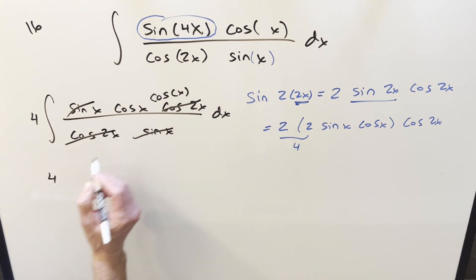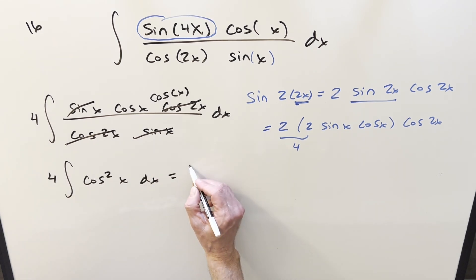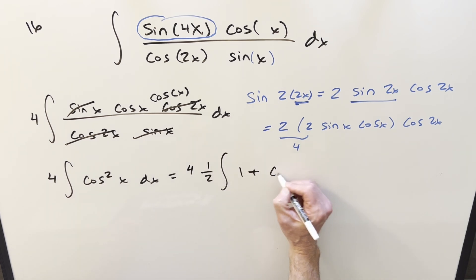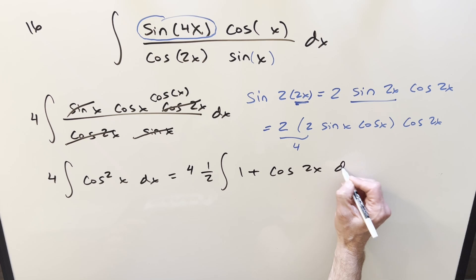But when I multiply those together, this is going to be, what we're left with is cosine squared x. And so what I can do is reduce that. The formula to reduce that is going to be 1 half, which I'll bring out front. And then this transforms to 1 plus cosine 2x.